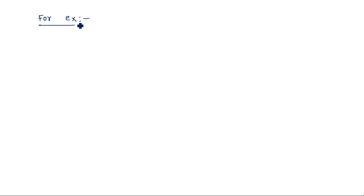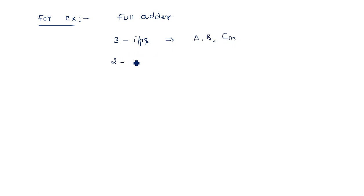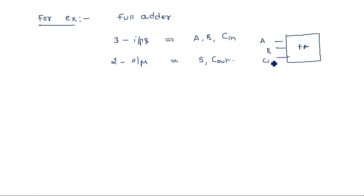Similarly, let us consider the full adder example — the same example used in the previous behavioral model video — for better understanding across all three styles. A full adder has three inputs: A, B, and C_in, and two outputs: Sum and Carry_out.